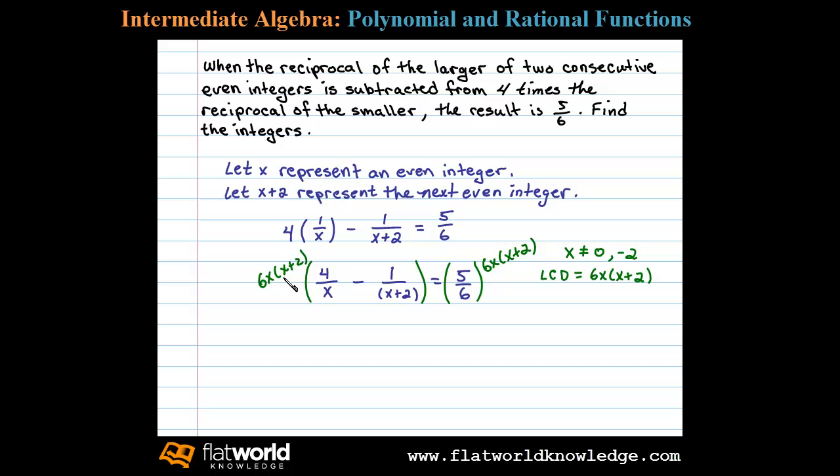Now on the left side we need to distribute, and so multiplying both sides by the LCD is equivalent to multiplying all the terms by the LCD. And so at this point you can see that we will have a lot of cancellation.